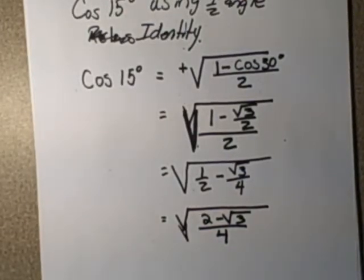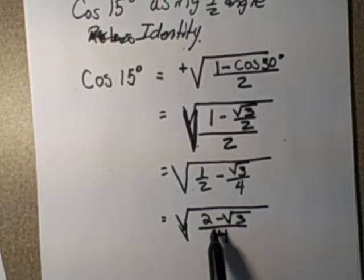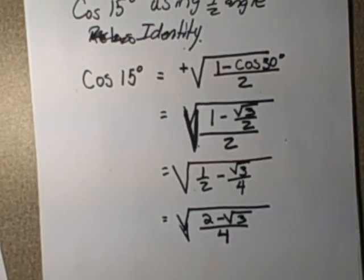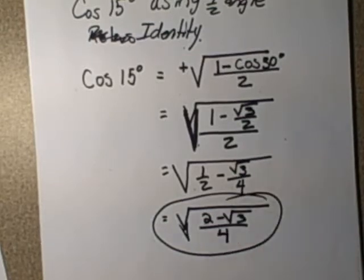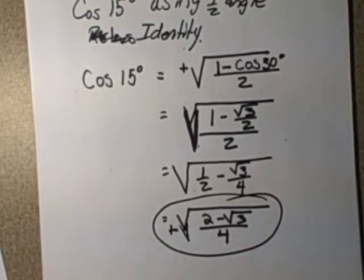Simplifying it any further could be quite difficult in the sense that suppose we could say it's the root of 2 minus the root of root 3 over 2, but I don't know how you could call that simpler. So this is as far as we'll go for that exact value. And it's positive.